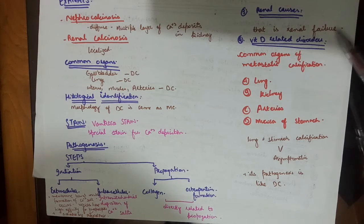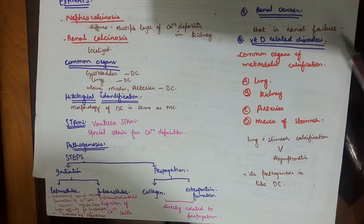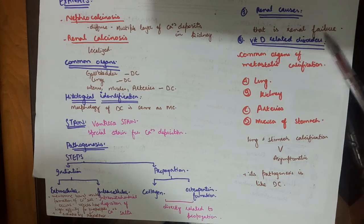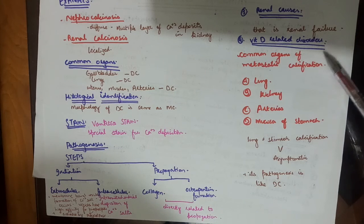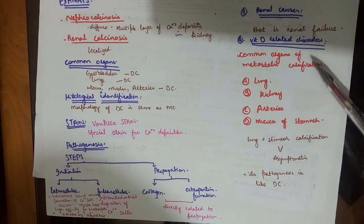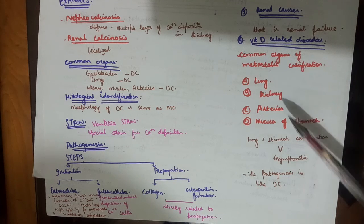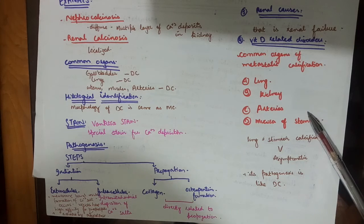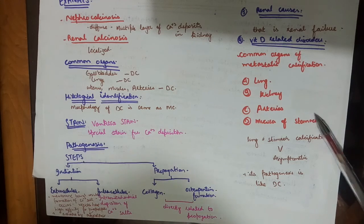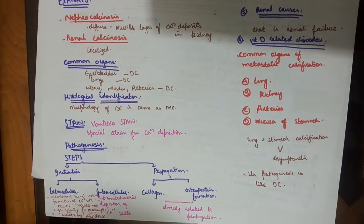For metastatic calcification, the causes include hyperparathyroidism, renal failure, and vitamin D-related disorders such as vitamin D intoxication. Common organs affected by metastatic calcification are the lungs, kidneys, arteries, and mucosa of the stomach. Some cases are asymptomatic while others are symptomatic, and the pathogenesis is similar to that of dystrophic calcification.